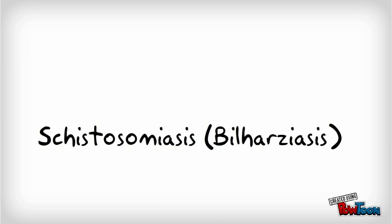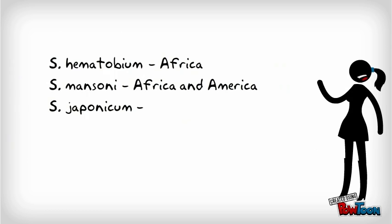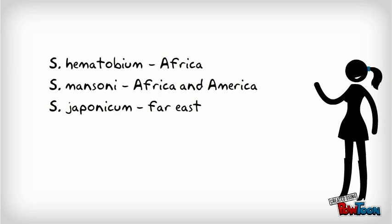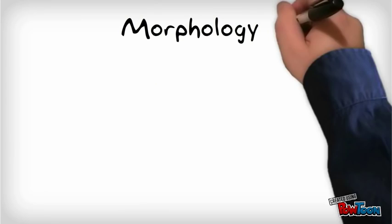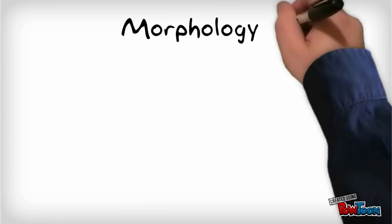For Schistosomiasis, also known as bilharziasis: the blood flukes, known as Schistosoma, have different geographical distributions. S. haematobium is prevalent in Africa, S. mansoni in Africa and America, and S. japonicum in the Far East. Approximately 250 million people are affected and 600 million are at risk of Schistosomiasis.